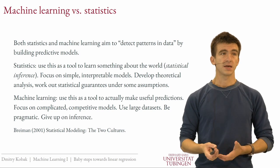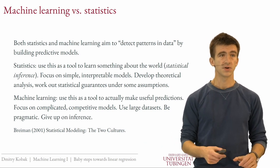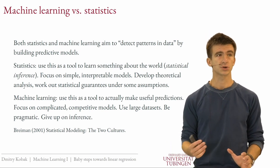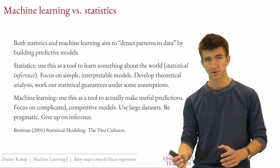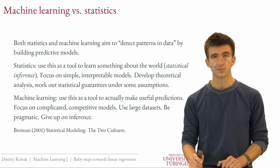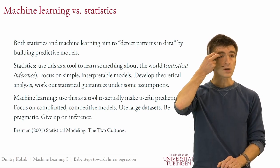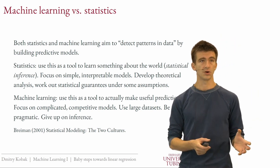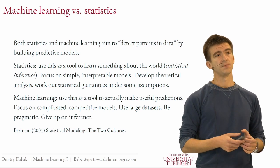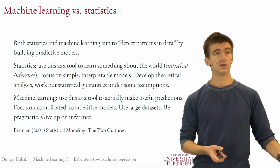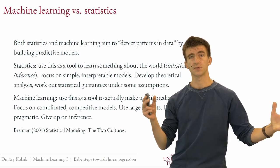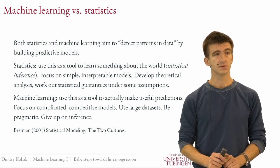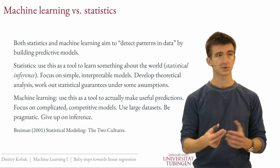Therefore machine learning focuses usually on complicated models — deep neural networks or something like that — and uses very large datasets. As long as your model works in practice, great, you achieved your goal. You usually do not try to learn anything about cats and dogs by training a neural network to classify them; you just want your system to be useful when somebody does a Google image search. So to a large extent, we are giving up on statistical inference but focusing more on prediction. There is a nice paper from 20 years ago called Statistical Modeling: The Two Cultures — very influential and philosophical — and even though machine learning changed entirely over those 20 years, I think this conceptual distinction still holds.